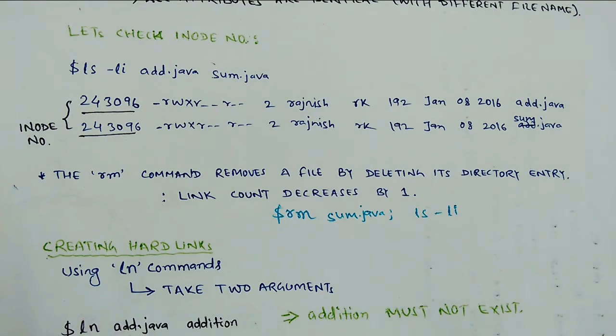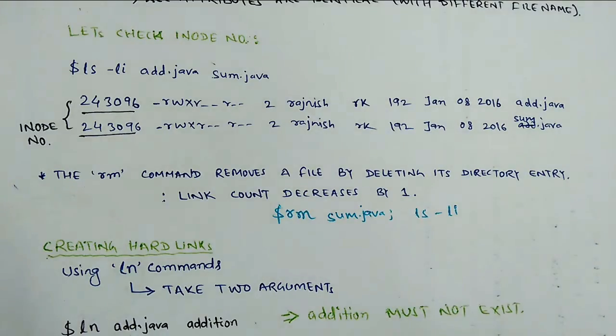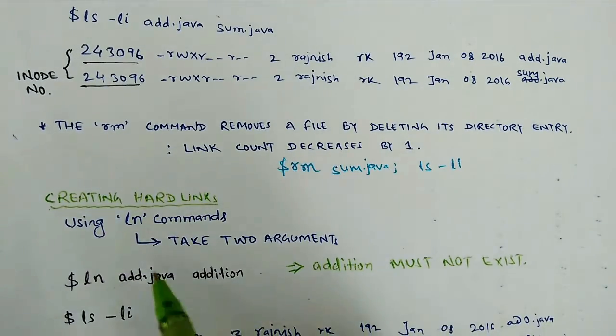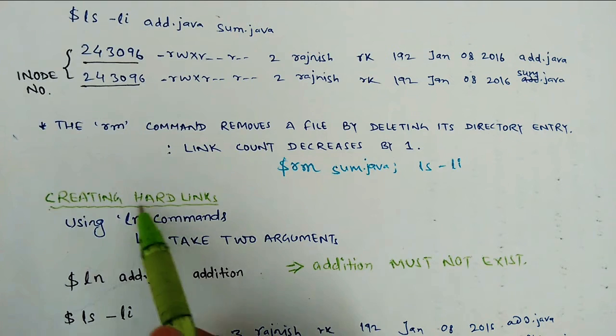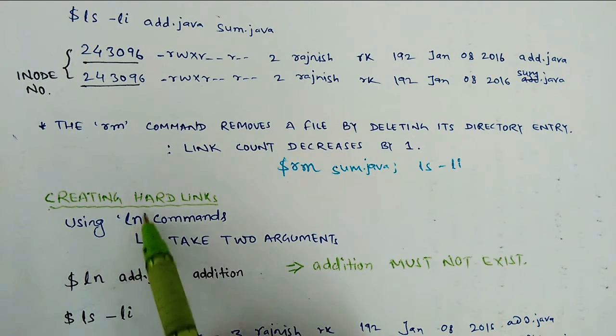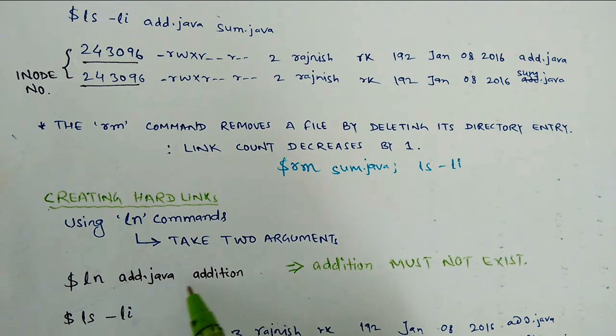Now we can see how hard links are generated. How do we generate multiple copies using a command? This is the ln command. The ln command takes two arguments. Suppose that we have add.java file. Now we create a new file that does not exist.